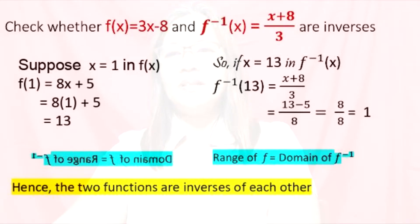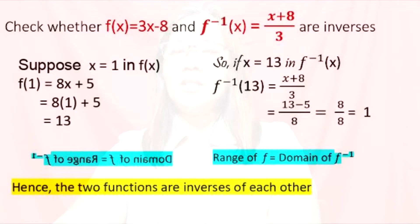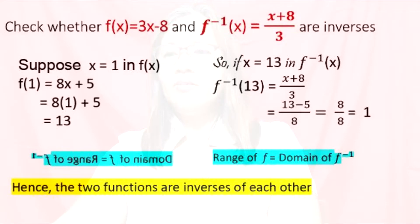To verify: suppose x = 1 in f(x). f(1) = 3(1) − 8 = −5. Then for x = −5 in f⁻¹(x), f⁻¹(−5) = (−5 + 8) / 3 = 3 / 3 = 1. The domain of f is the range of f⁻¹ and the range of f is the domain of f⁻¹. Hence, the two functions are inverses of each other.